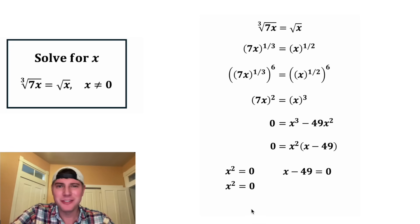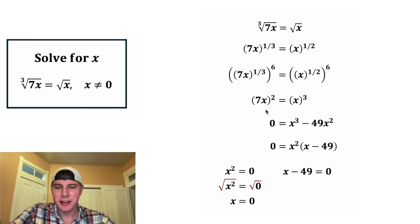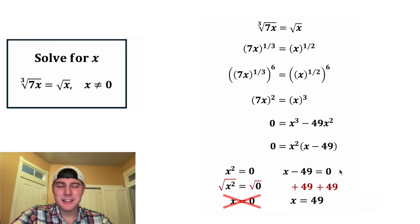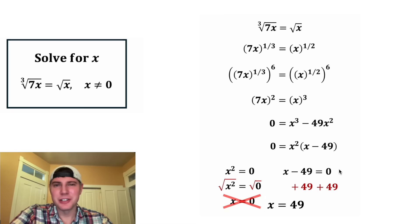That means either x squared equals zero or x minus 49 equals zero. For x squared equals zero, if we square root both sides, we end up with x equals zero. But up here, we were told x cannot equal zero, so this is not a valid solution. And then for x minus 49 equals zero, if we add 49 to both sides, we end up with x equals 49. And this is the answer to our question. Let's put a box around it.